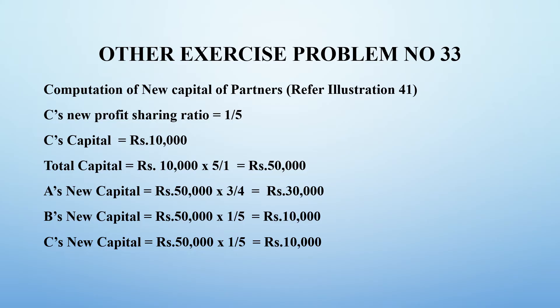To find the total capital value: 10,000 into 5/1 = 50,000 rupees. This is the new total capital of the firm split by the new profit sharing ratio 3:1:1. A's new capital is 50,000 into 3/5 = 30,000 rupees. B's new capital is 50,000 into 1/5 = 10,000 rupees.